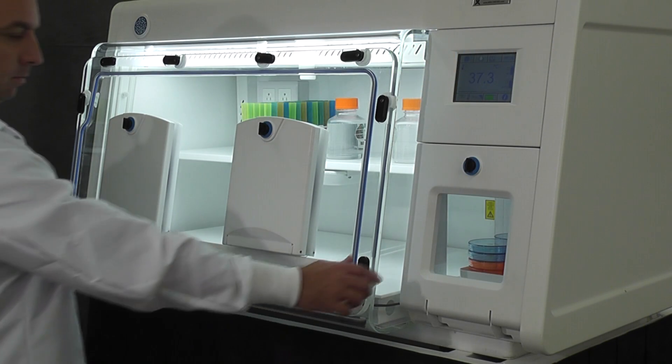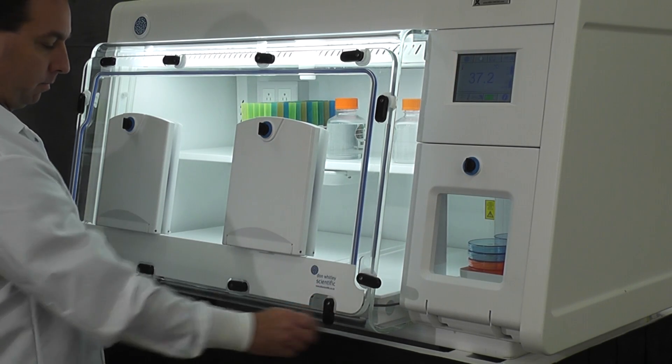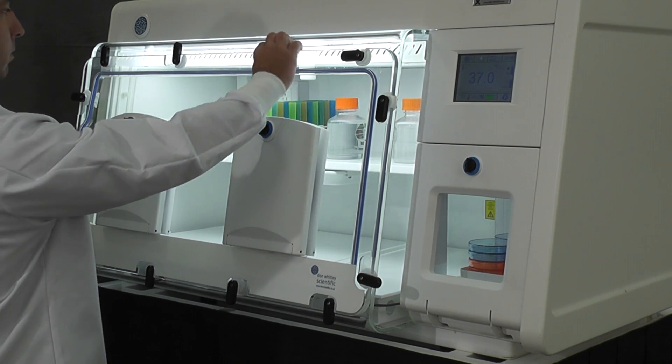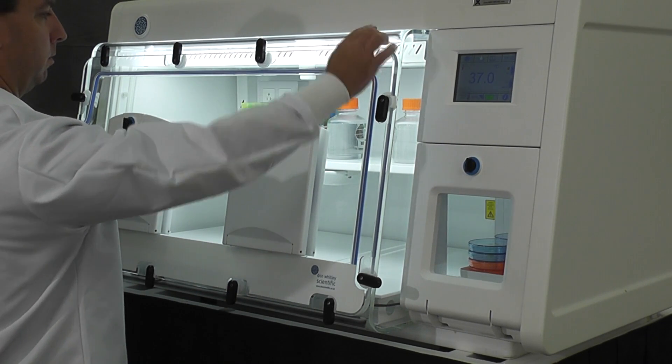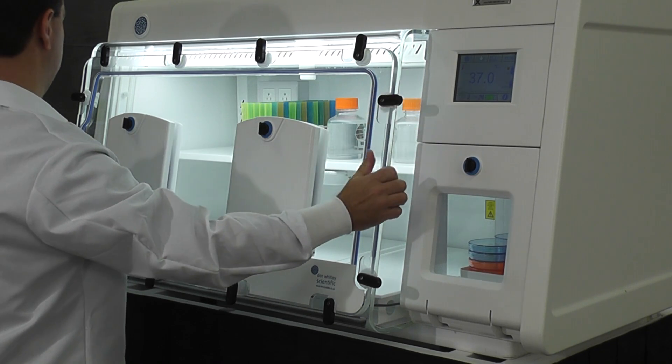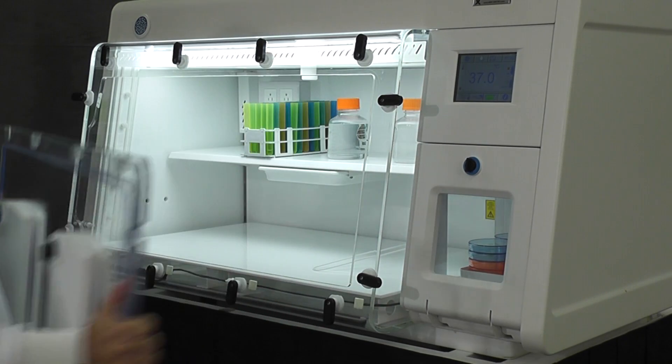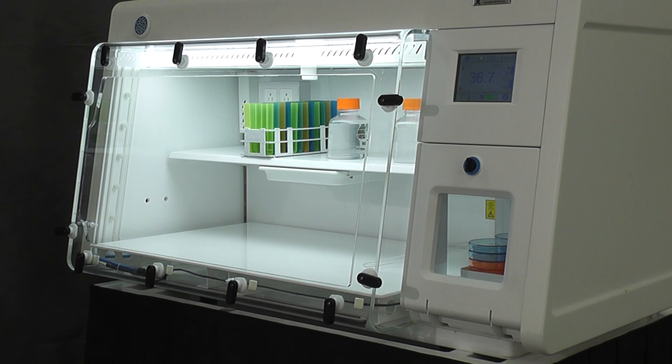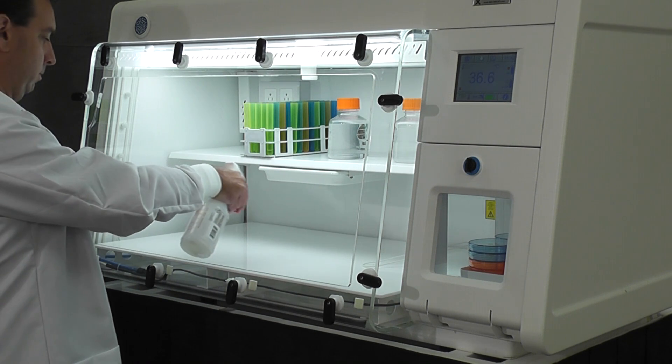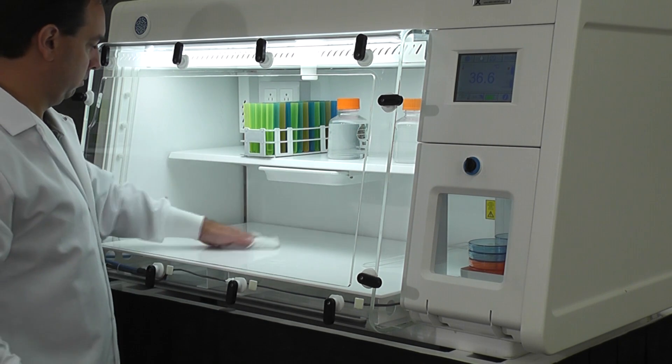The A35 is available with an optional removable front. Simply release the latches surrounding the perimeter of the front shell and using both hands lift the front away from the cabinet. This feature facilitates easy decontamination between experiments and the introduction and removal of large pieces of instrumentation.